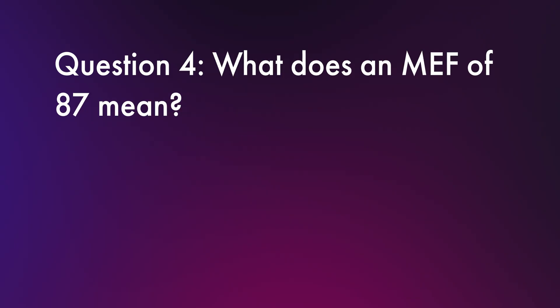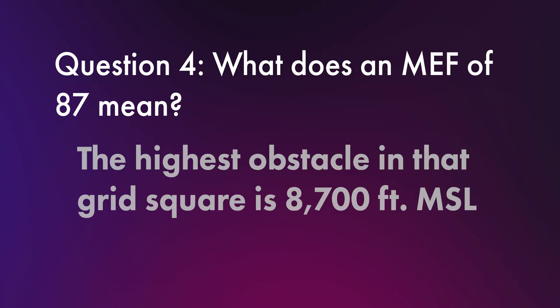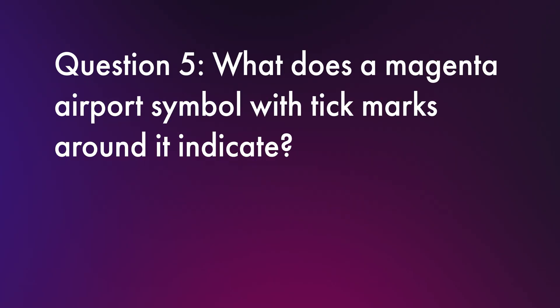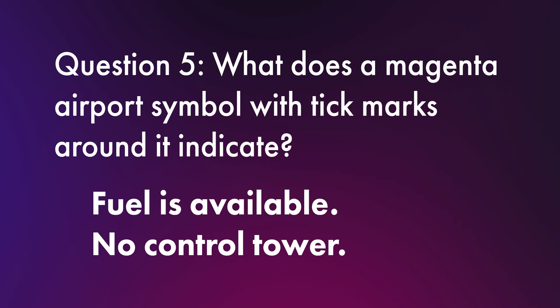Question four: what does an MEF of 87 mean? The answer is that the highest obstacle in that grid square is 8,700 feet mean sea level. Last question: you see a magenta airport symbol with tick marks around it. What does that tell you? The answer is that the airport has fuel available during normal hours but no control tower.